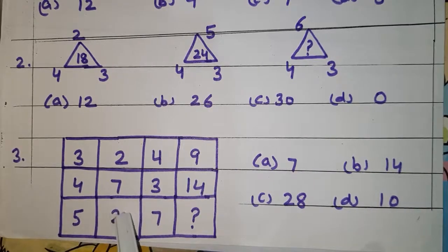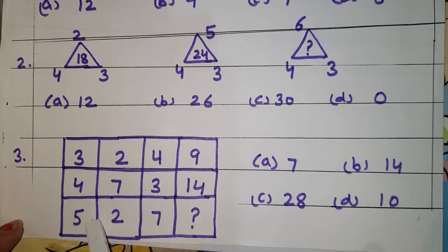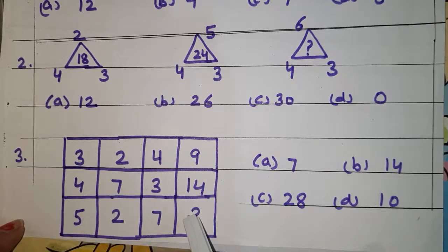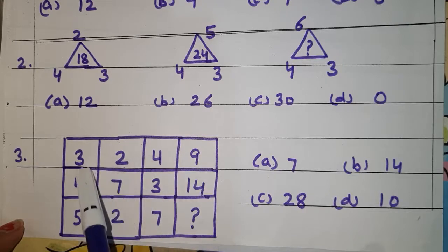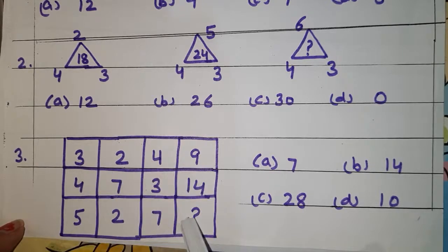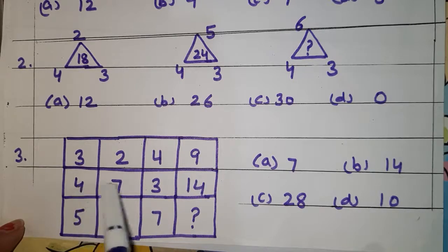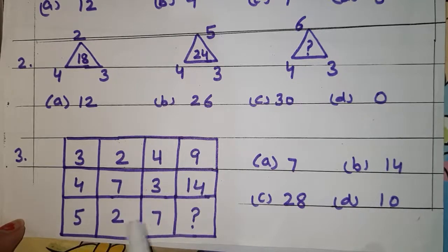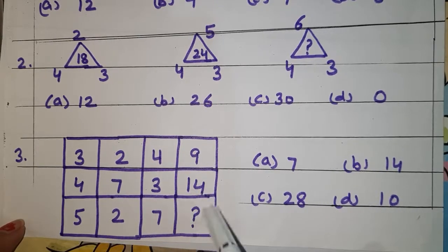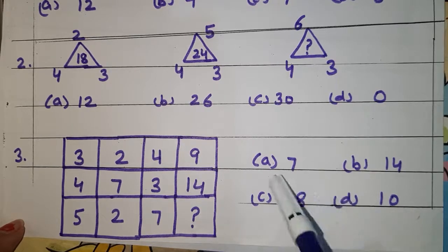Question number 3. A table is given in which few numbers are written. You have to find out which rule is followed. The digits are: 3, 2, 4, 9, 4, 7, 3, 14, 5, 2, 7, and then a question mark. You have to search the missing digit — the missing term. From the given options you will choose the correct one.